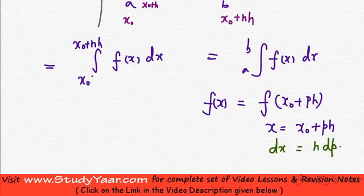When you have x equal to x0, your p is equal to 0. And when you have x equal to x0 plus nh, your p is equal to n.